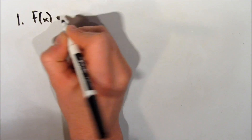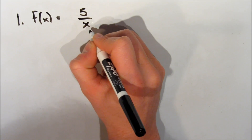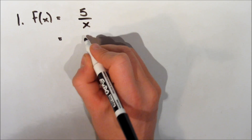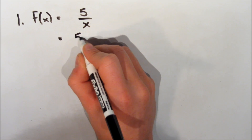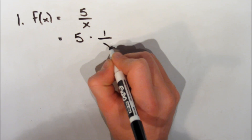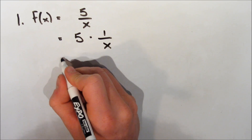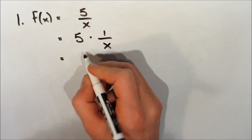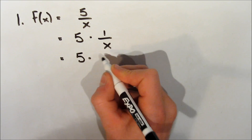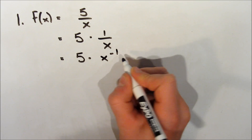We want to take the derivative of the function f of x is equal to 5 over x. So, we can actually write this function a little differently. We're going to write it as 5 times 1 over x, and similarly, we can write it as 5 times x to the exponent negative 1.